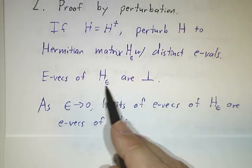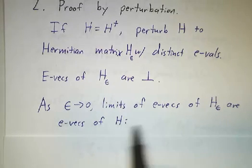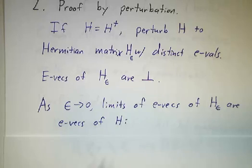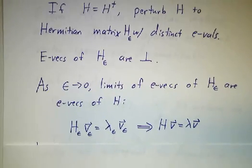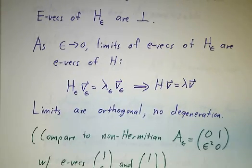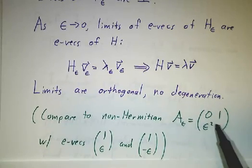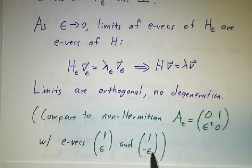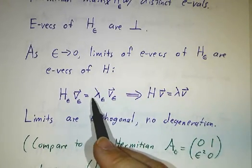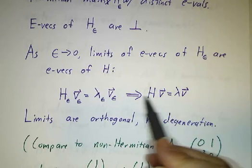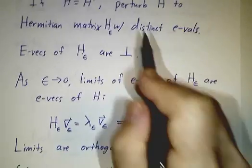The eigenvectors of H_ε in the limit become eigenvectors of H. And because they're orthogonal, in the limit they stay orthogonal — they can't collapse in on themselves. If you had two eigenvectors that were orthogonal, the limit of one can't be the same as the limit of the other; the limits have to be orthogonal. So that's our proof by perturbation.